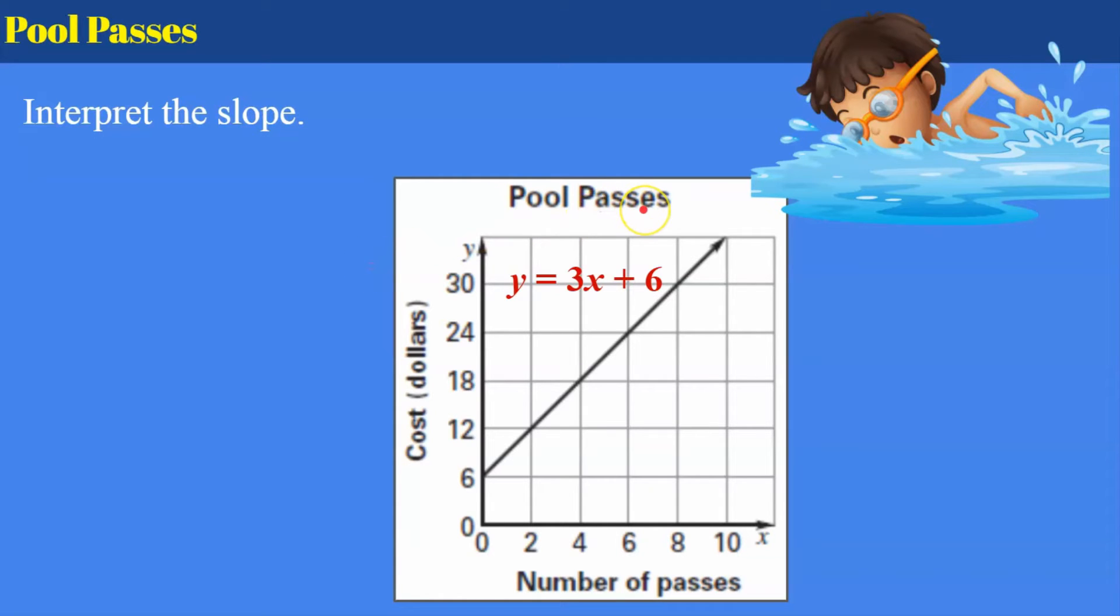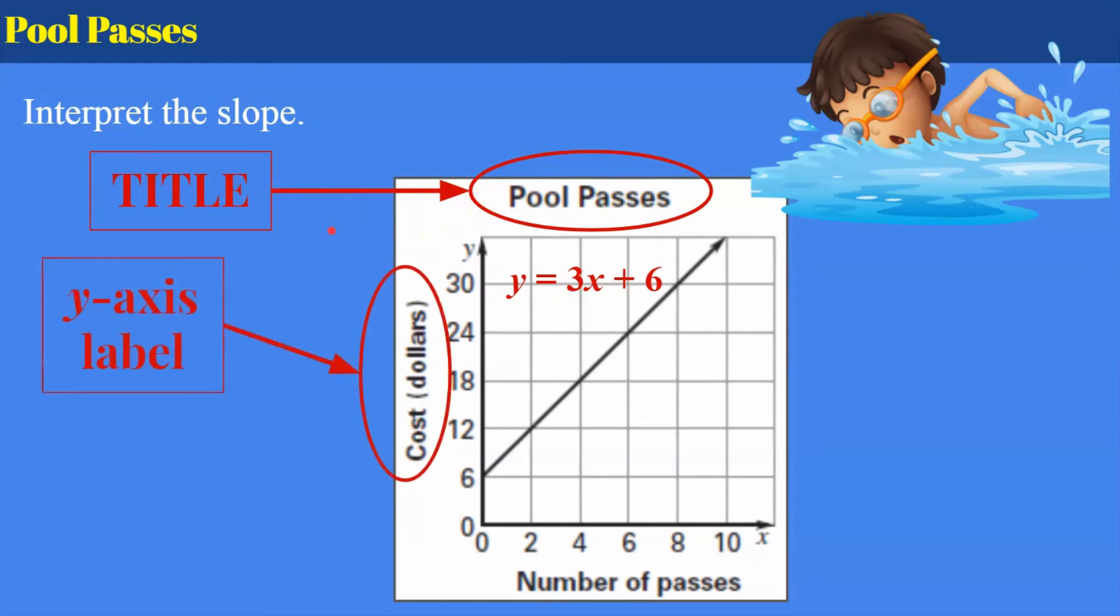So let's look at this graph of pool passes. So here's our line. y equals 3x plus 6 is the equation of the line, noting that that's written in slope-intercept form y equals mx plus b. So m is my slope of 3. My title is pool passes. Our y-axis is telling us the cost in dollars. And then our x-axis is the number of passes. So we've identified all our key points here.